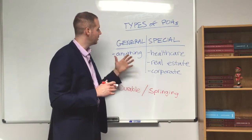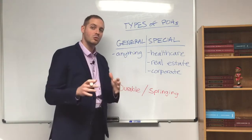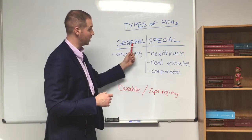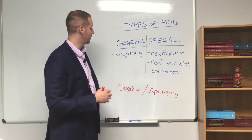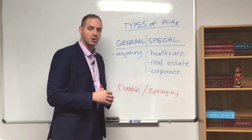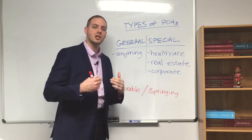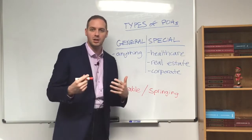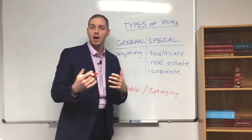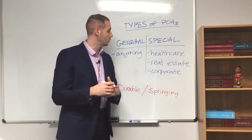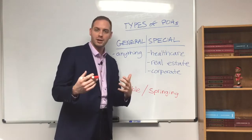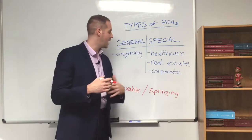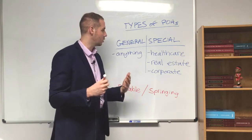Legally speaking, Louisiana actually only recognizes two actual types of power of attorneys: a general power of attorney and a special power of attorney. The general power of attorney grants general authority over anything. So broadly speaking, if you have a general power of attorney over your mother, you could go to the bank account, you could close out accounts, you could generally sign documents on her behalf and have that authority.